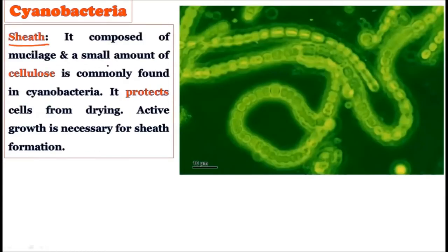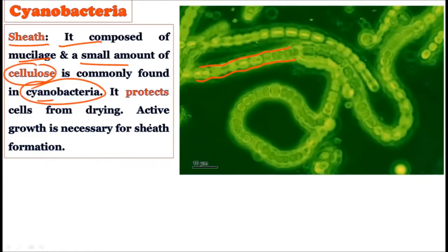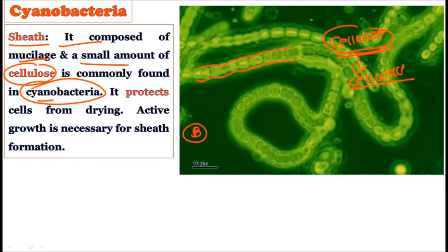Now consider the sheath. Whenever a trichome has a sheath, it is called a filament. The sheath is a mucilaginous structure, and a small amount of cellulose is commonly found in cyanobacteria. This is a very important point because cellulose is an important chemical component of the cell wall of algae. So the mucilaginous sheath on the outer side of the trichome is made up of small amounts of cellulose.